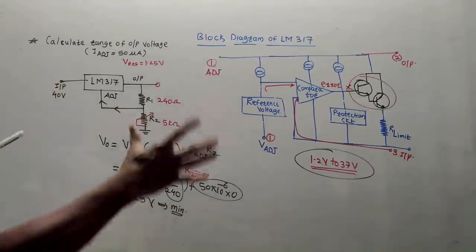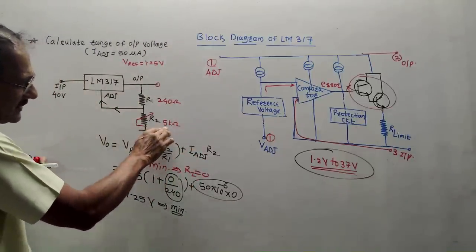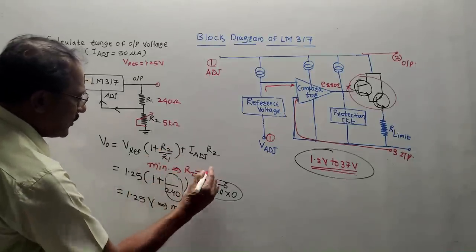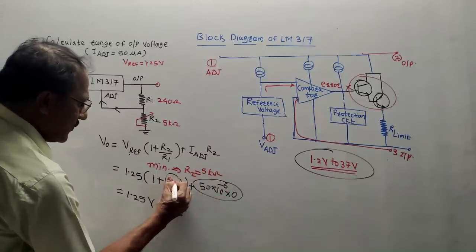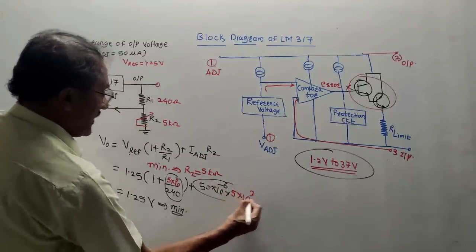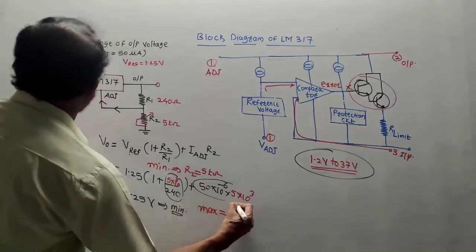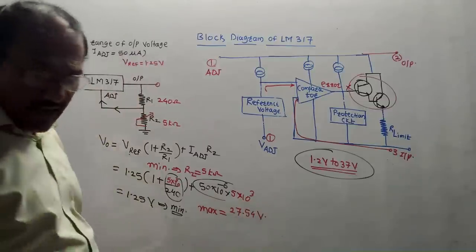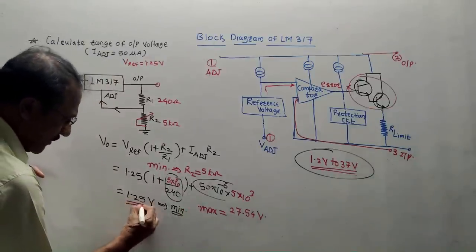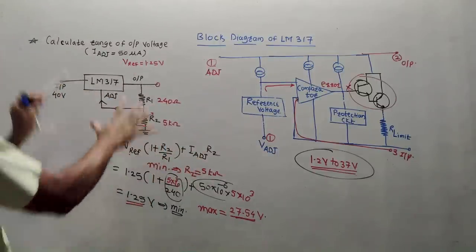To calculate the maximum output voltage, use the maximum value of R2, which is given in the question as 5 kΩ (5×10³ Ω). Put R2 = 5×10³ in the formula. If you solve this on the calculator, the maximum voltage is 27.54 V. Keep in mind the answer should be within the 1.2 to 37 V range — only then is your calculated answer correct. So the range is 1.25 V to 27.54 V. With just this single formula, you can solve any such numerical.